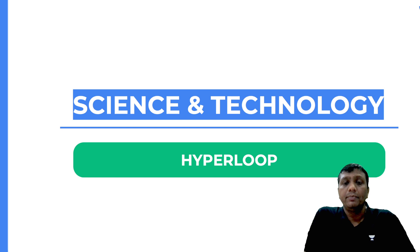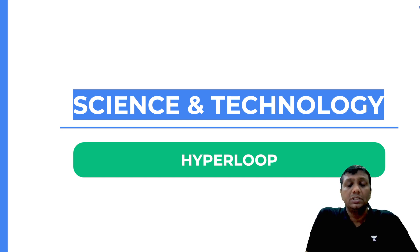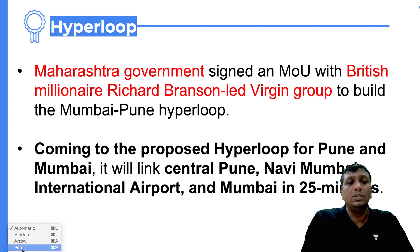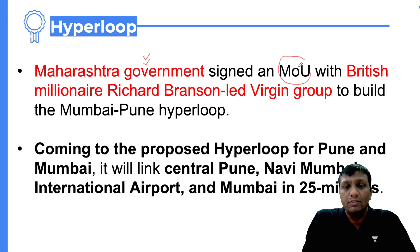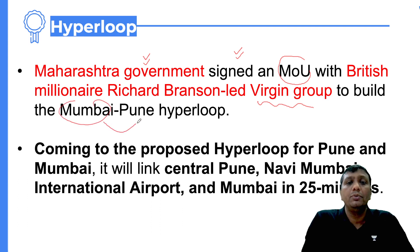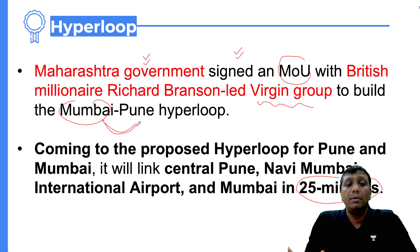Finally, we reach the topic: Science and Technology — the hyperloop train. There was news that the Maharashtra government signed a Memorandum of Understanding with a British company, the Virgin Group, specifically for the hyperloop train. The hyperloop train will run between Mumbai and Pune, and this entire journey will be covered in just 20 to 25 minutes.